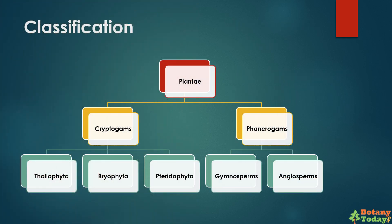The kingdom plantae is divided into two sub-kingdoms: cryptogames and phanerogames. Cryptogames are again sub-divided into three groups, i.e., thallophyta, bryophyta, and pteridophyta. Similarly, phanerogames are also divided into two groups, i.e., gymnosperms and angiosperms. Cryptogames are the seedless plants while phanerogames bear seeds.